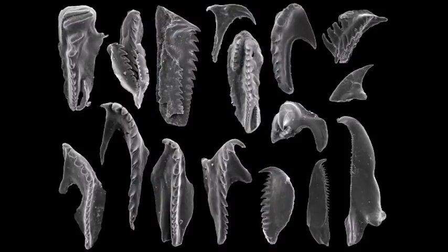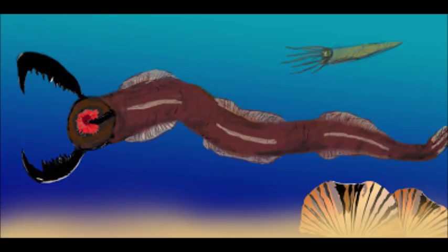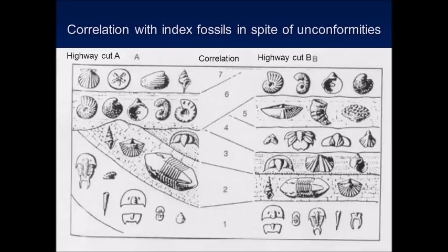Lastly, scolecodonts are the remains of polychaete annelid jaws, which fossilized well because of their tough chitin. They first appear in the Cambrian and have since diversified and undergone various evolutionary trends based on their specific lineages. The takeaway is that there are numerous different types of microscopic index fossils that aid researchers in both paleontology and archaeology, illuminating everything from paleoclimatology to oceanography to phylogenetics.